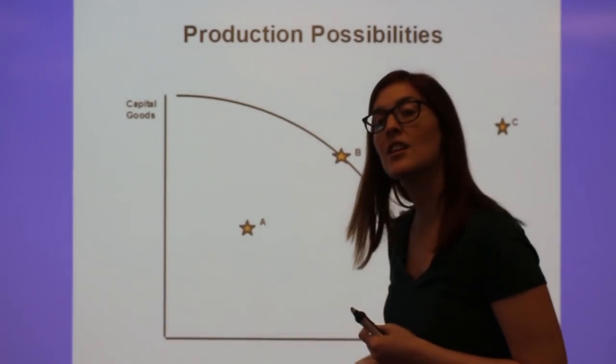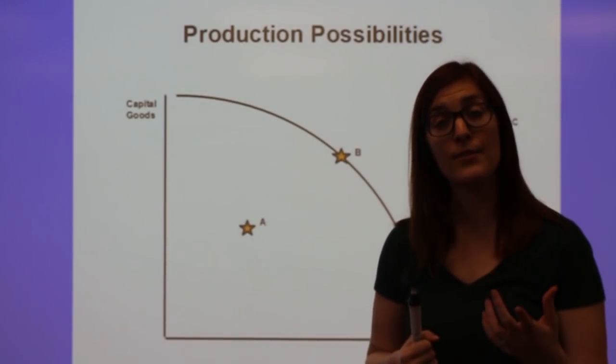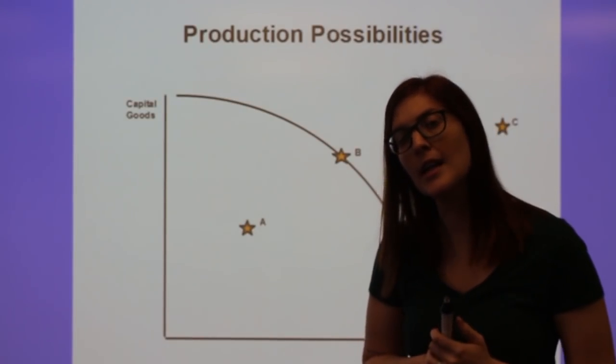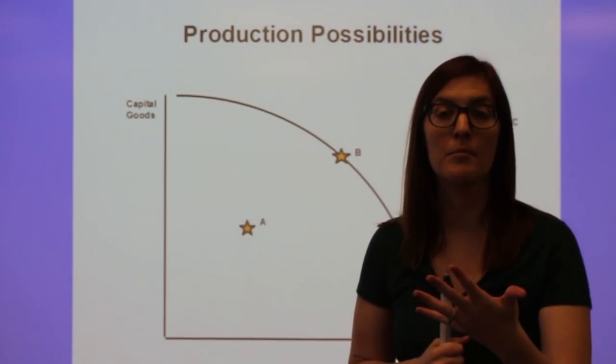So a point inside the line is an economy suffering from a recession or inefficiency. They have the resources, but they're not using it. The most common resource we're talking about is unemployment. They have the labor, but since they're not using it, unemployment exists.